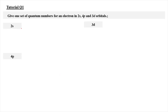For tutorial question 1, we need to give one set of quantum numbers for an electron in 2s, 4p, and 3d orbital. So when the electron is in 2s, the n value is going to be 2, l here is going to be 0, because 0 refers to s. And when l is equal to 0, m is going to be 0. And for s here, you can decide by your own — you can choose positive half or negative half.